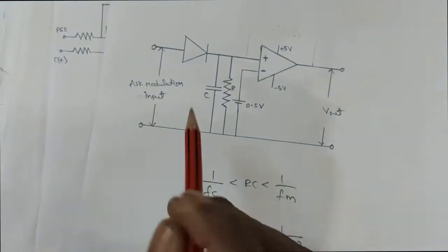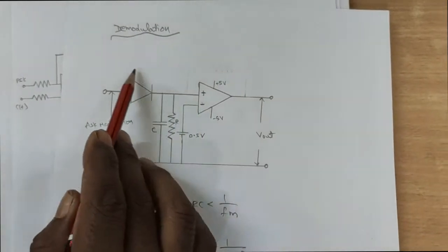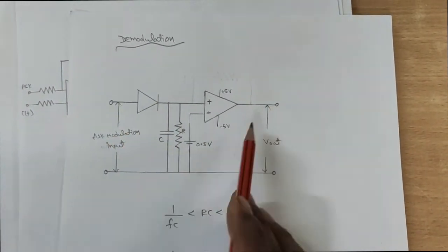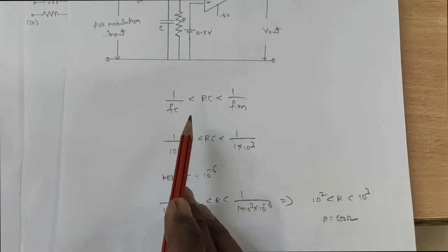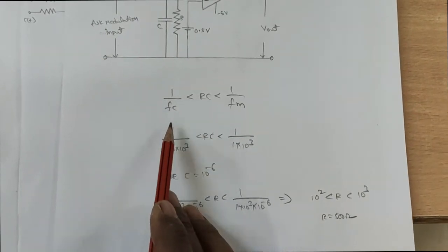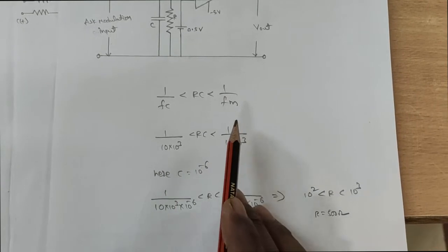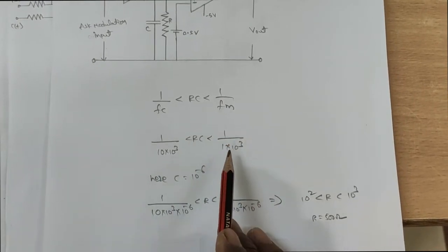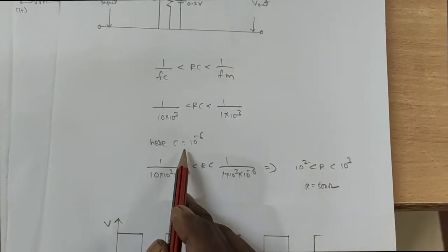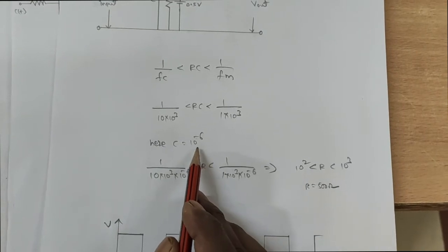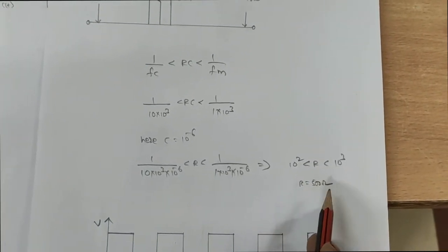This is the ASK Demodulation circuit. Here this is the envelope detector and this is the comparator. The RC condition is 1/FC less than RC less than 1/FM. Here the carrier frequency is 10K and the message signal frequency is 1K. Choose C as 1 microfarad and calculate the resistor as 500 ohms.